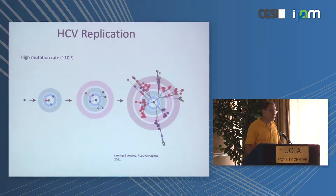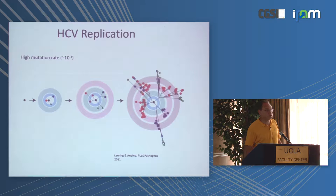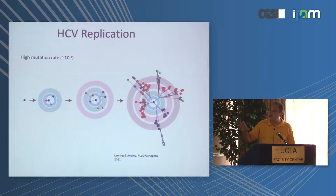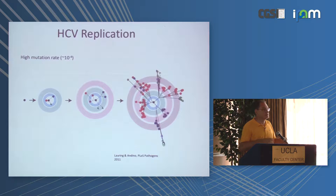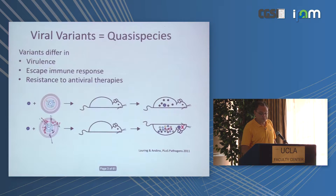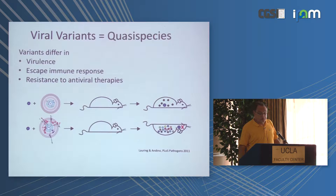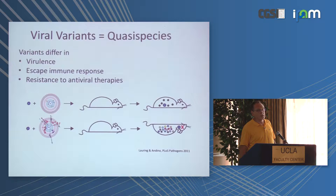RNA viruses are different — the majority of viruses are RNA viruses, although there are DNA viruses too. RNA viruses are single-stranded, and because they're single-stranded, they mutate a lot and very fast. You can see here a phylogenetic tree representation of that. As a result, they live not as a single species but as what's called quasi-species — the entire population may consist of quite different variants from each other.